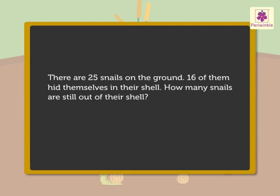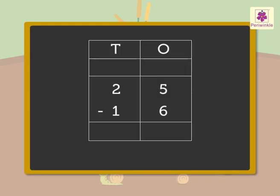Now, let us see what information we have and what we have to find out. We have to find out how many snails are out of their shell. To find the answer, we have to subtract 16 from 25. So first, we have to regroup the two tens, as 5 is less than 6.